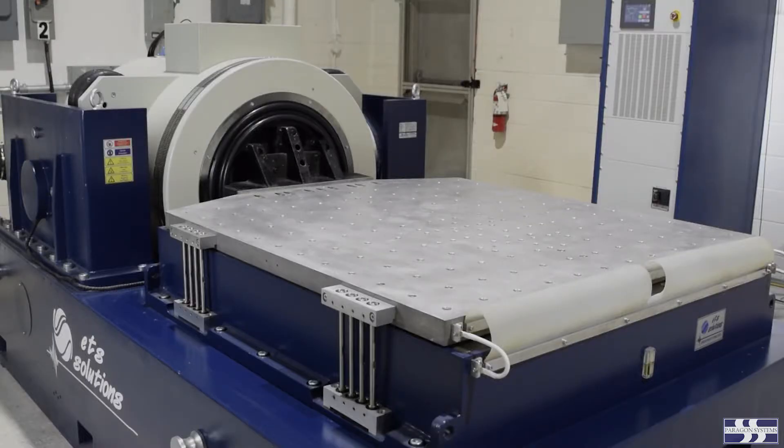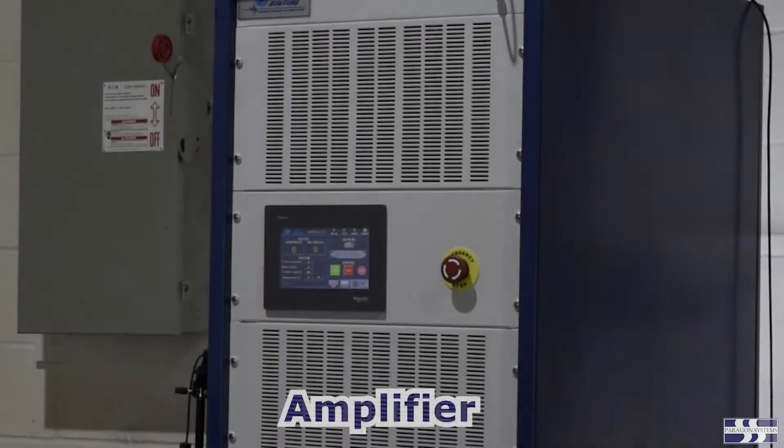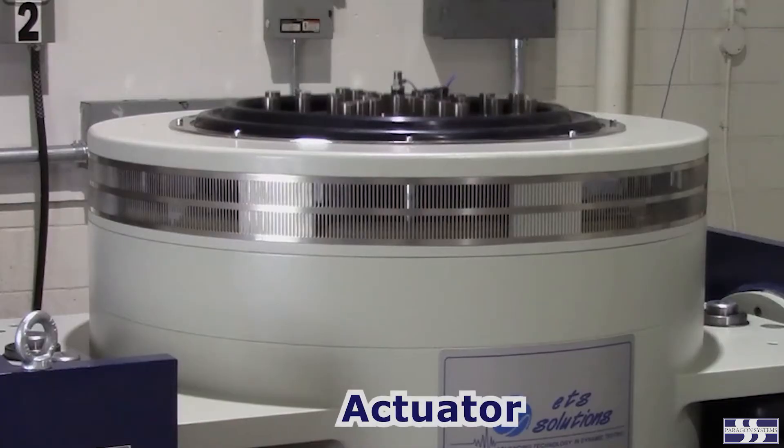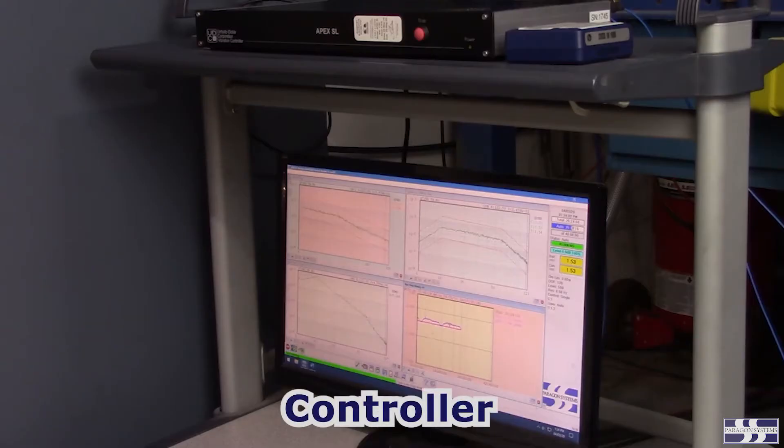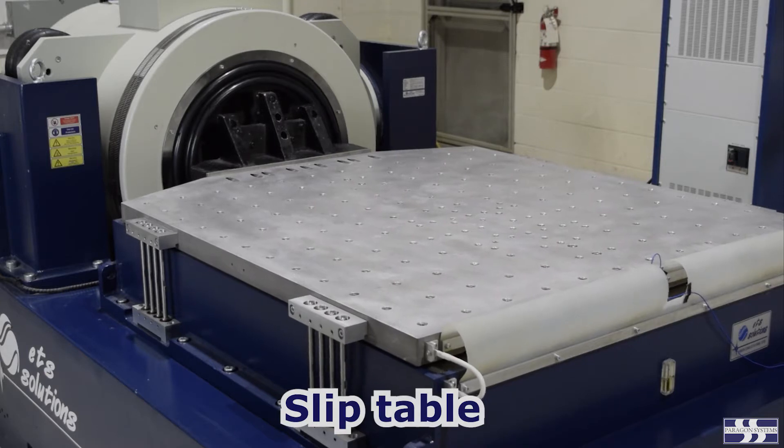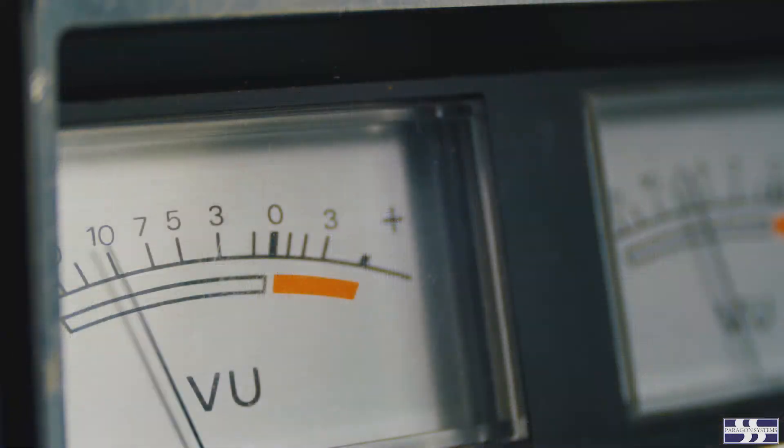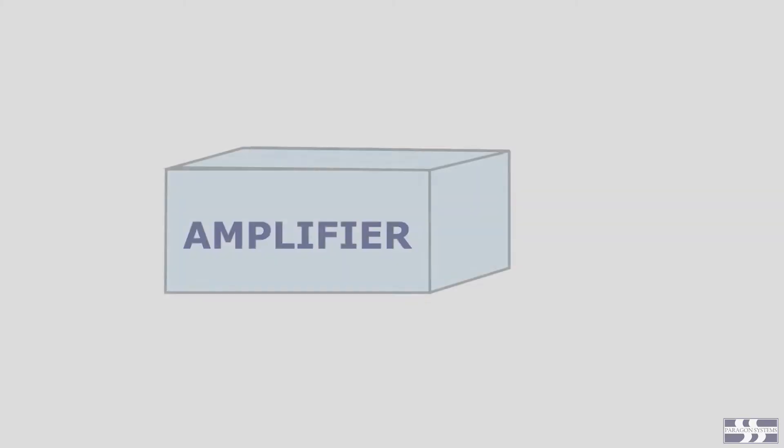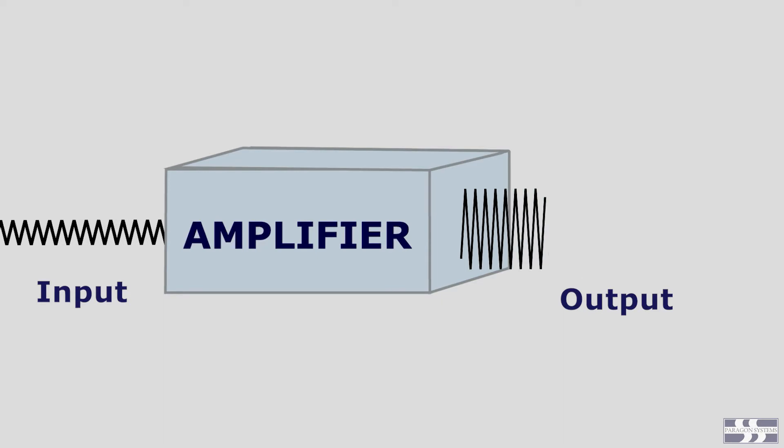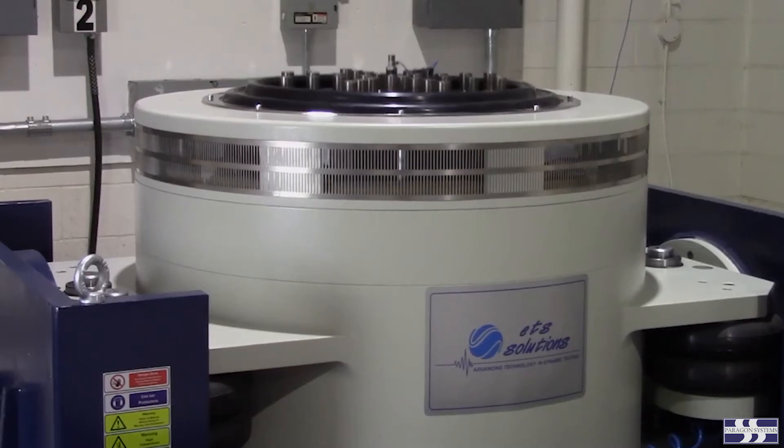We use electrodynamic shakers at Paragon Systems Testing to perform vibration testing in three axes. An electrodynamic shaker consists of four basic components: an amplifier, an actuator, a controller, and a slip table. The shaker amplifier works very much like a stereo system audio amplifier. It uses mains electrical energy and takes a low-level alternating electrical signal from a vibration controller and amplifies it into a signal of many thousands of watts.